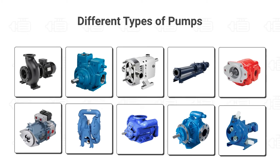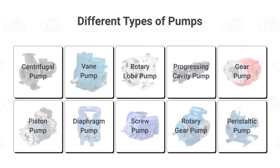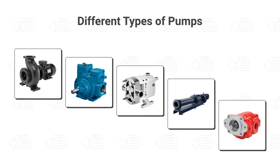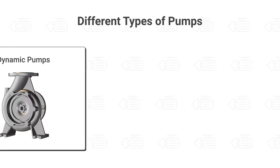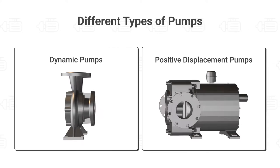There are many different types of pumps. Here, we will help you understand the differences between each pump type. We can generally categorize pumps into two major types, which work in very different ways, and these two types encapsulate most pumps: Dynamic pumps and Positive displacement pumps.